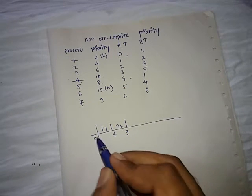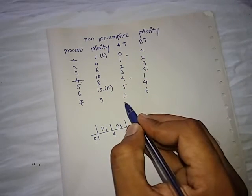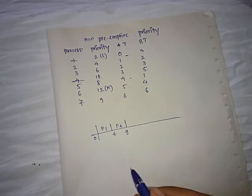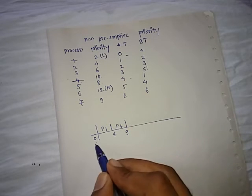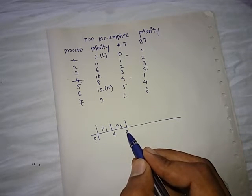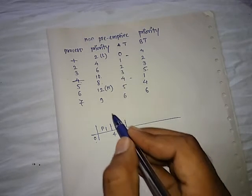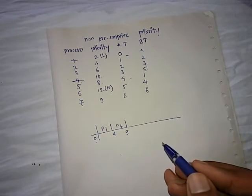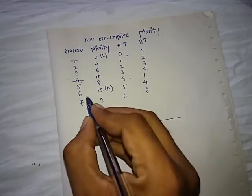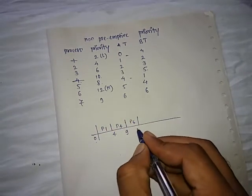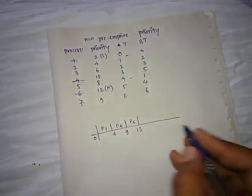Again check: we have completed from time interval 0 to 9. How many processes are in the system? The largest arrival time among the remaining processes is 6, and we have completed up to time 9, so all remaining processes are currently available for scheduling. According to priority, the next highest is 12, which is P6, so we schedule P6. Its burst time is 4, so it finishes at time 13.